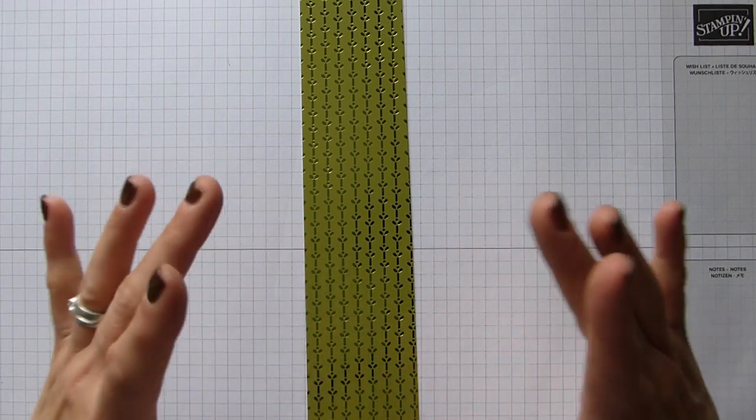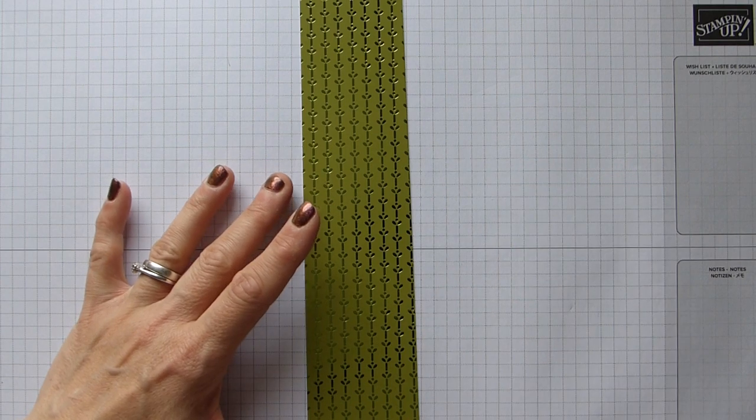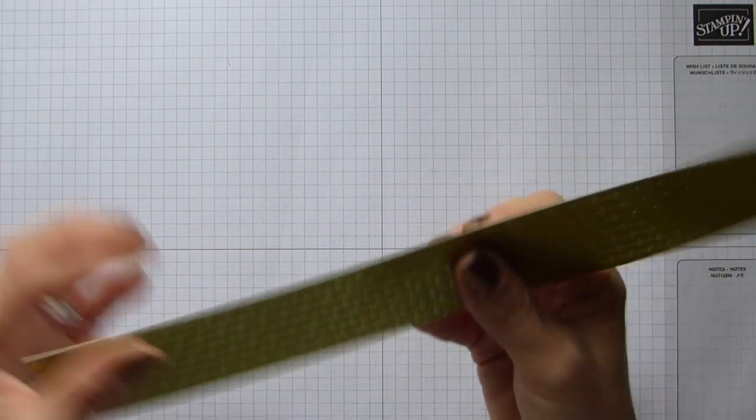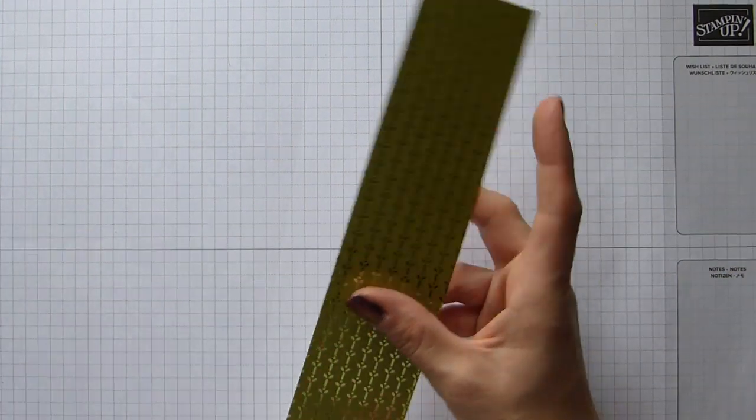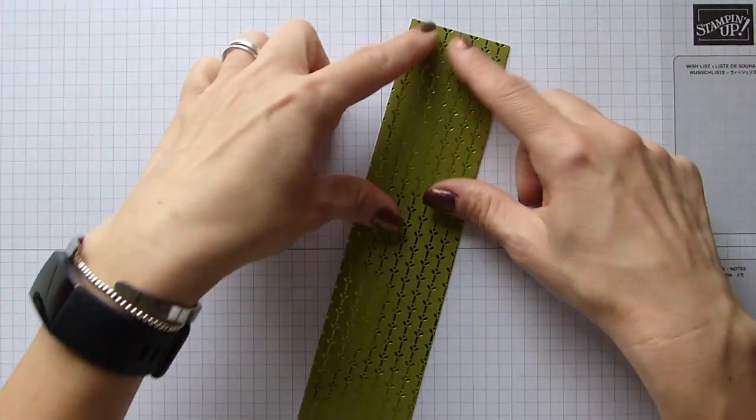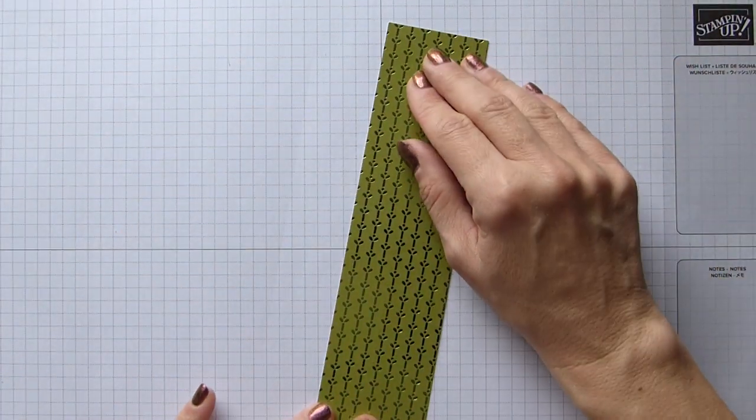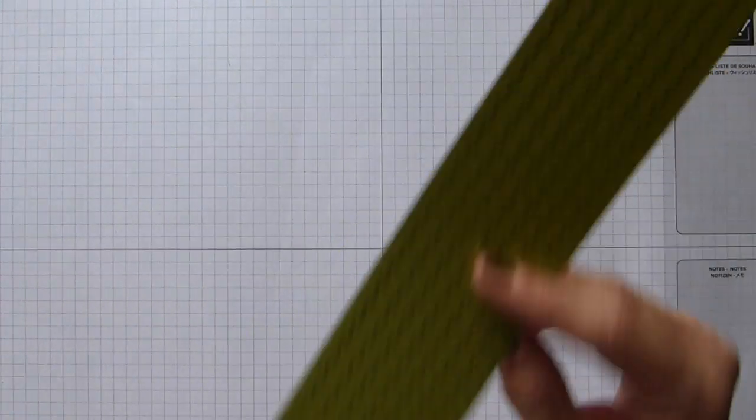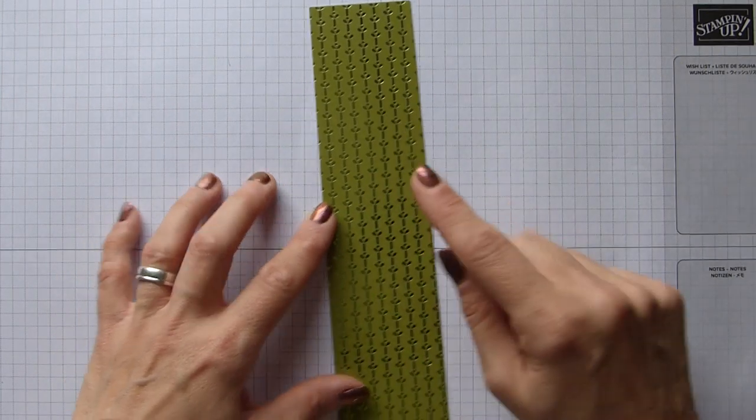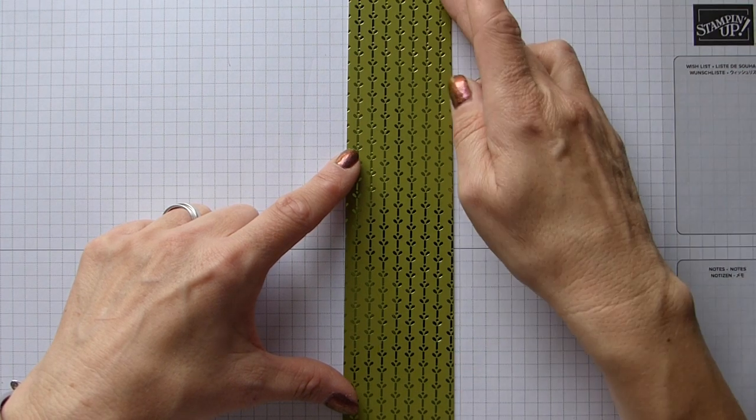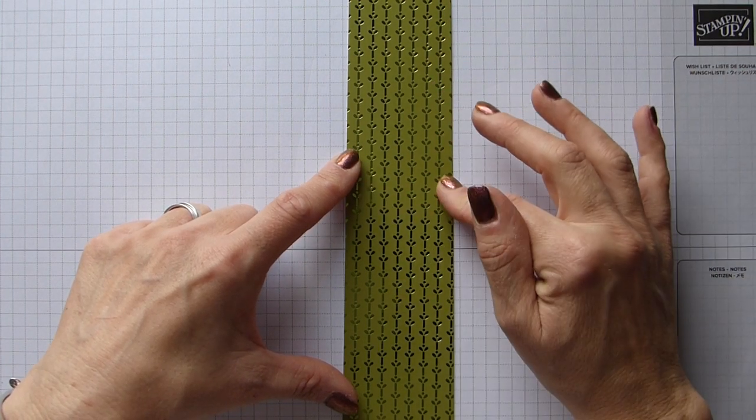So to start off with, a strip of DSP, such a habit to say cardstock. I've used this noble peacock because it is thick. If you were to use the thinner paper, you'd probably need to use cardstock and then add your layers of DSP for strength because the paper wouldn't really be strong enough. This measures 11.5 by 2 inches, which is 29.5 by 5 centimeters.